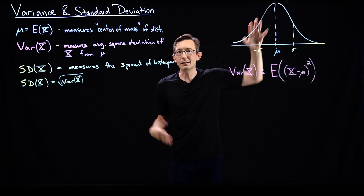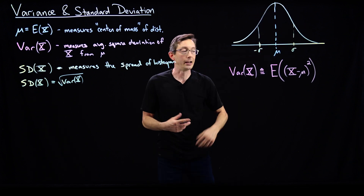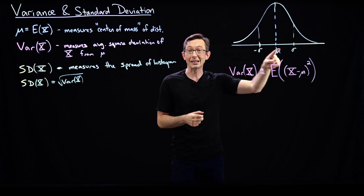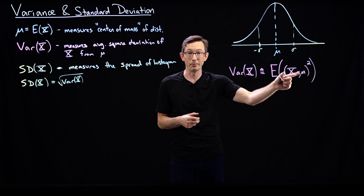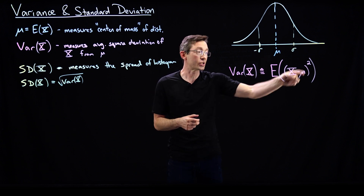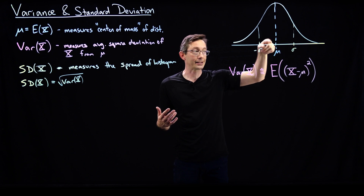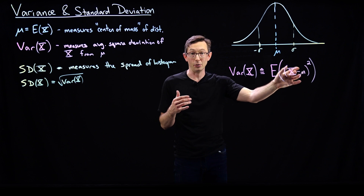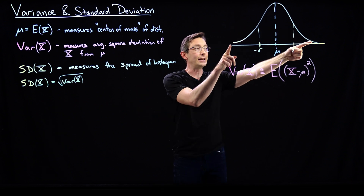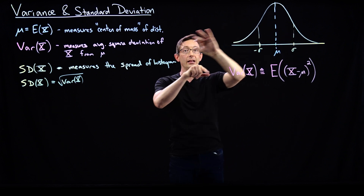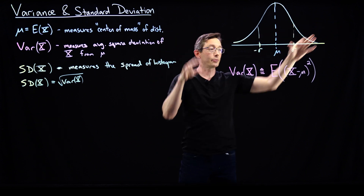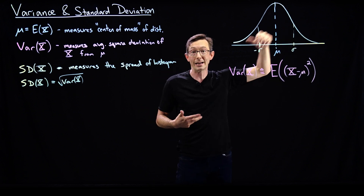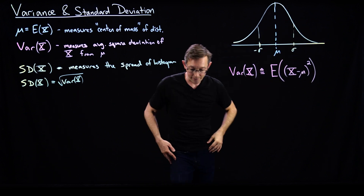We know that mu is the mean value — the average value. But if my distribution has some spread and I randomly sample values of x, they're probably not going to be exactly equal to mu. So what is the expected value of the square of the difference between x and mu? If I have really long tails or a wide distribution, this will be bigger because x minus mu tends to be large when I randomly sample x.